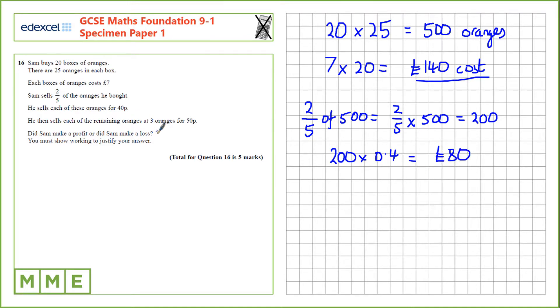He then sells the remaining oranges at 3 for 50 pence. So he sold 200, he's got 300 left. He then sells every three of them so he can divide by 3 for 50 pence each. So that's 100 times 0.5 which is £50 made.